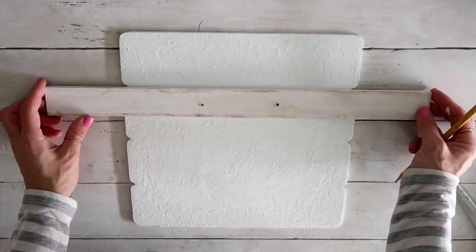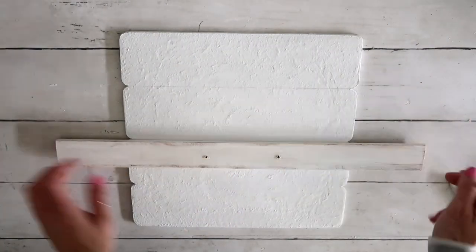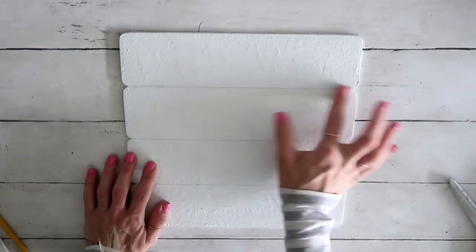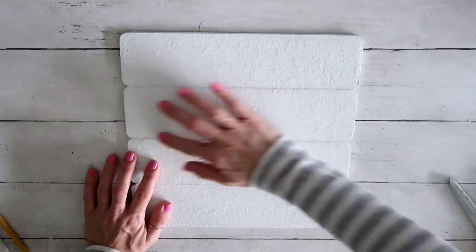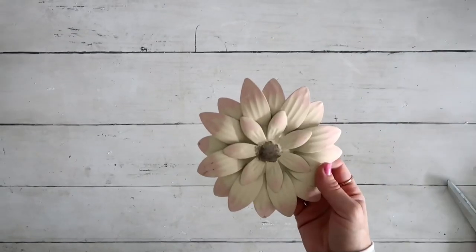Now I'm going to take a ruler and just pull the lines right there where those indentations are to create a shiplap look. I'm using a pencil and I'm going to just smudge it now with my fingers to make it stand out a little bit.